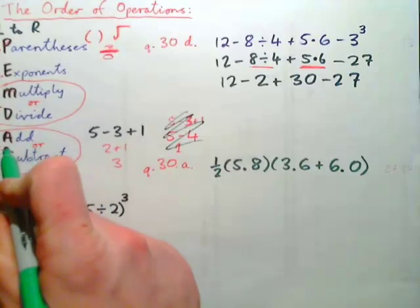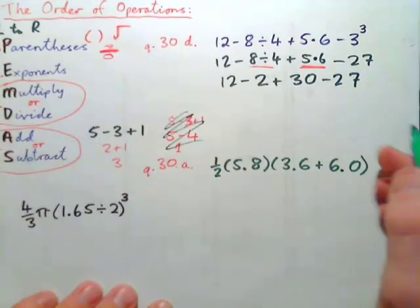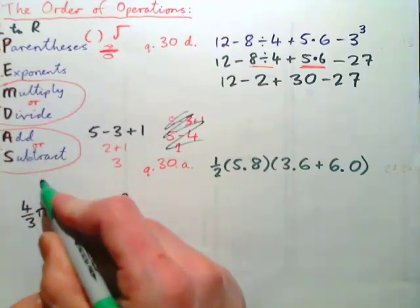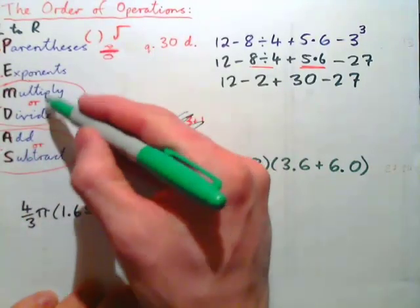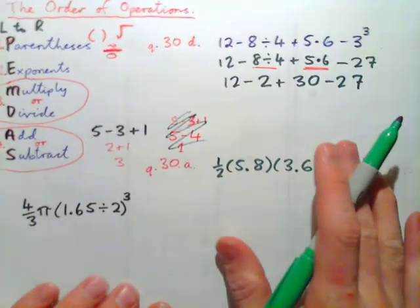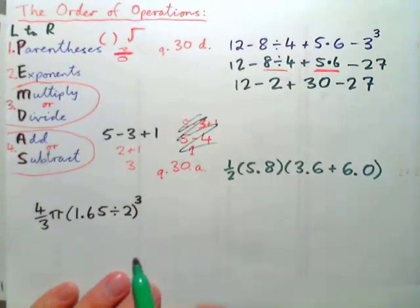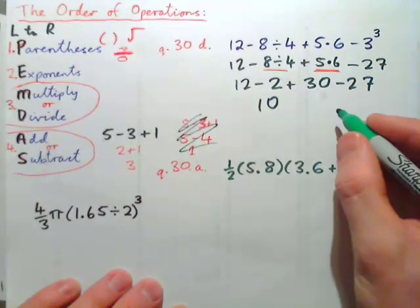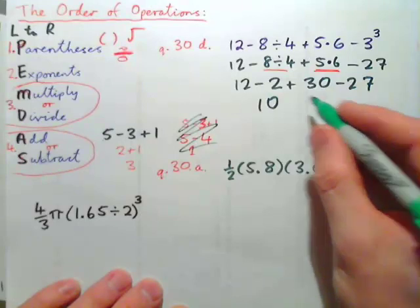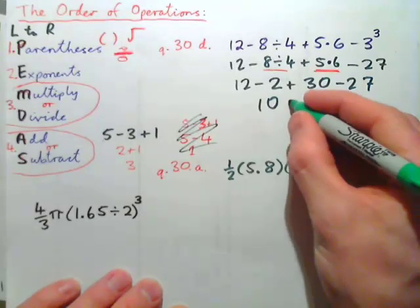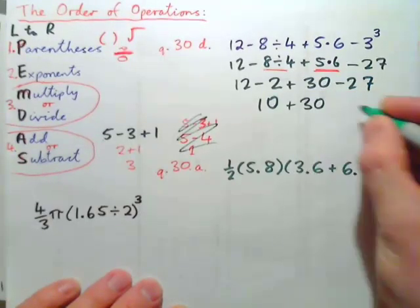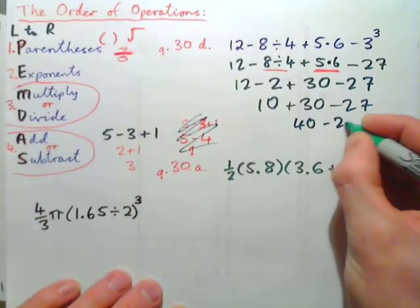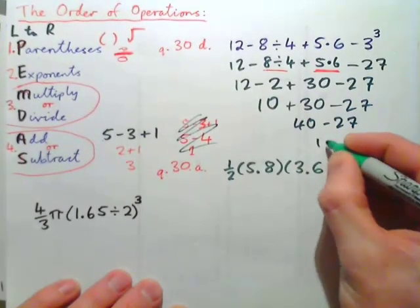Now we go from left to right and add or subtract. Addition and subtraction have the same importance, and multiplication and division have the same importance — you must go from left to right. So 12 minus 2 is 10, then plus 30 minus 27. 10 plus 30 is 40, minus 27 gives 13.